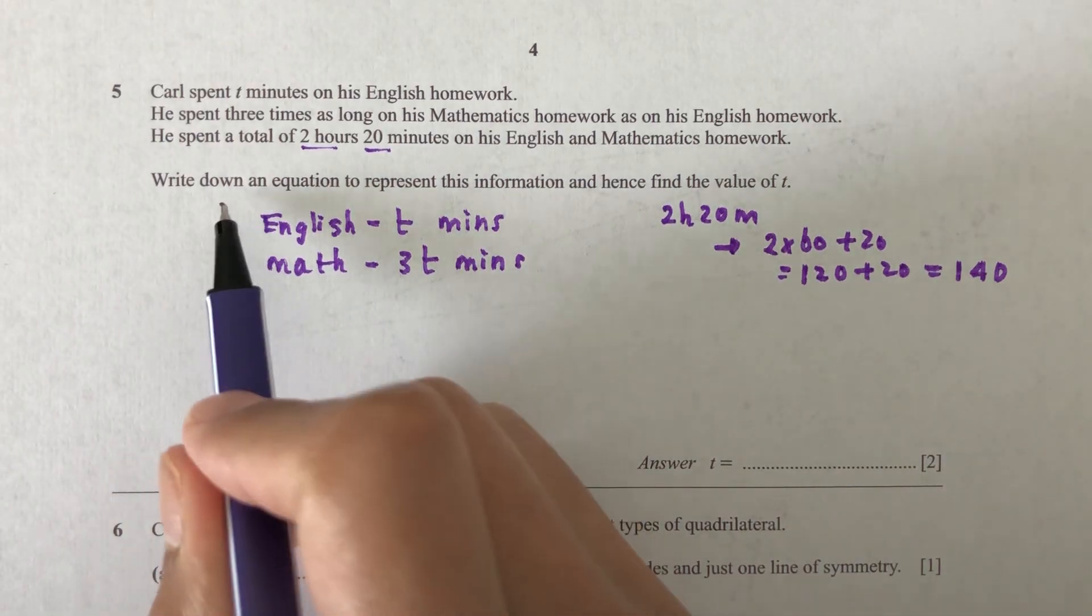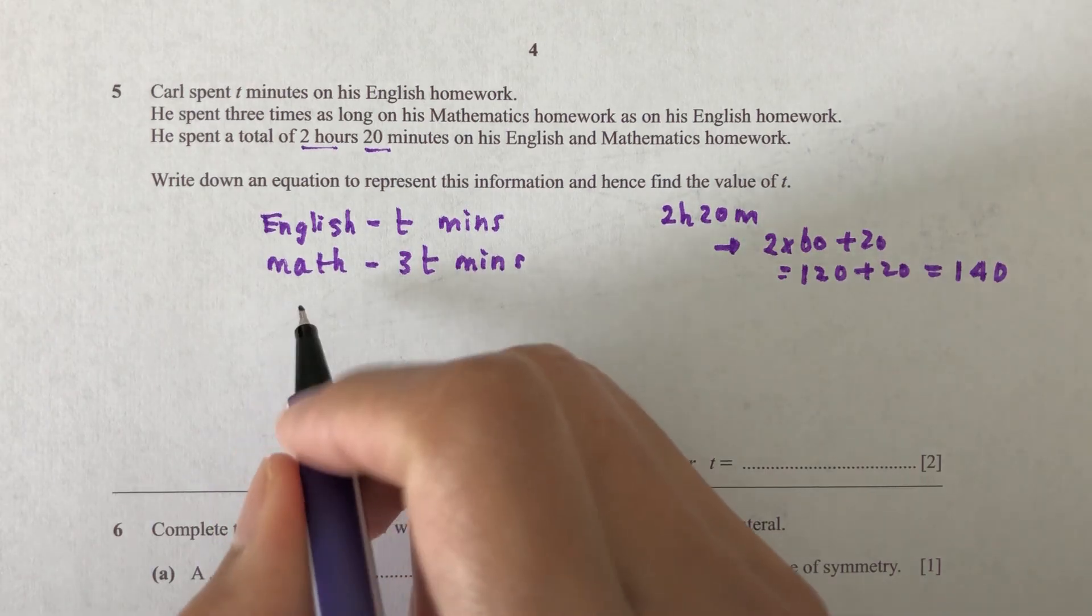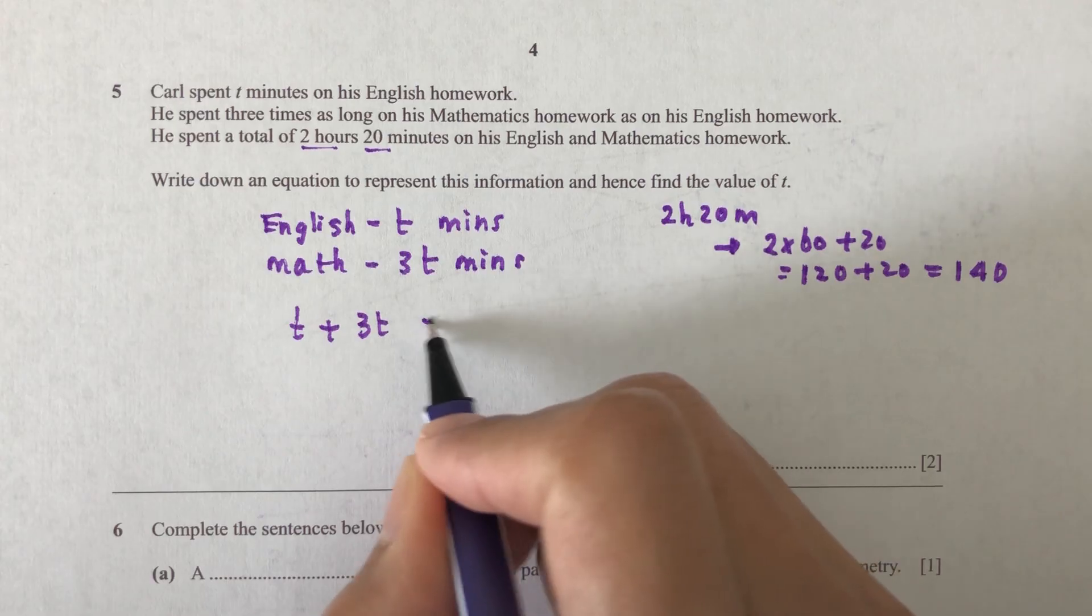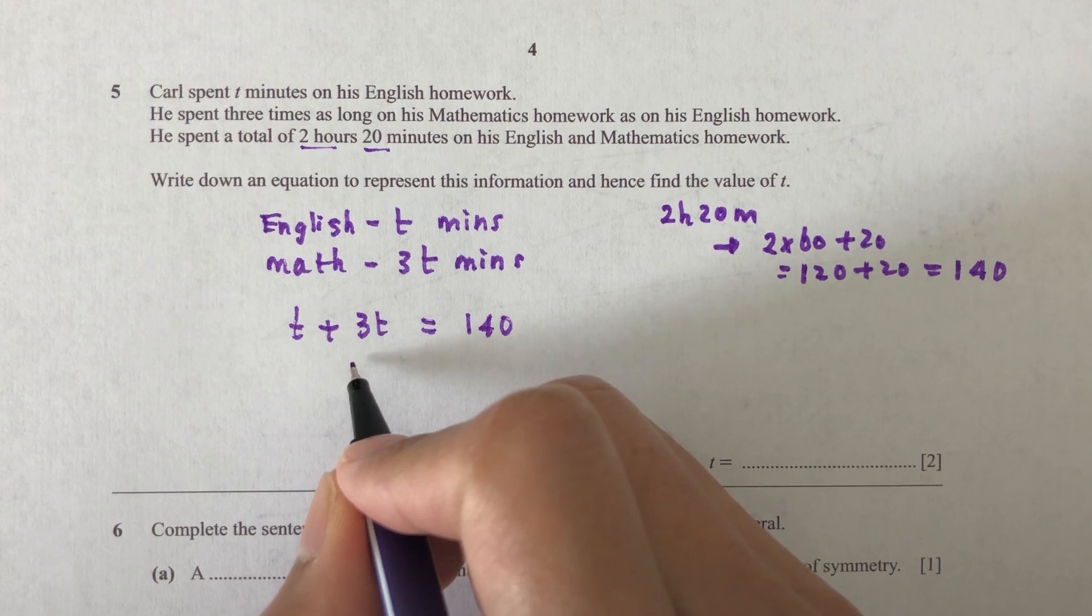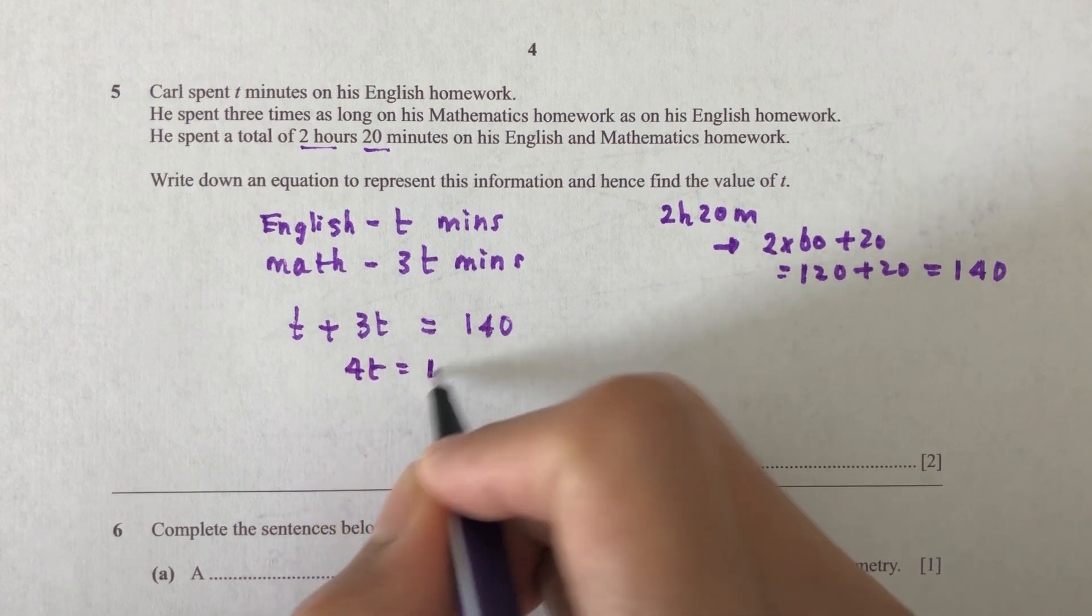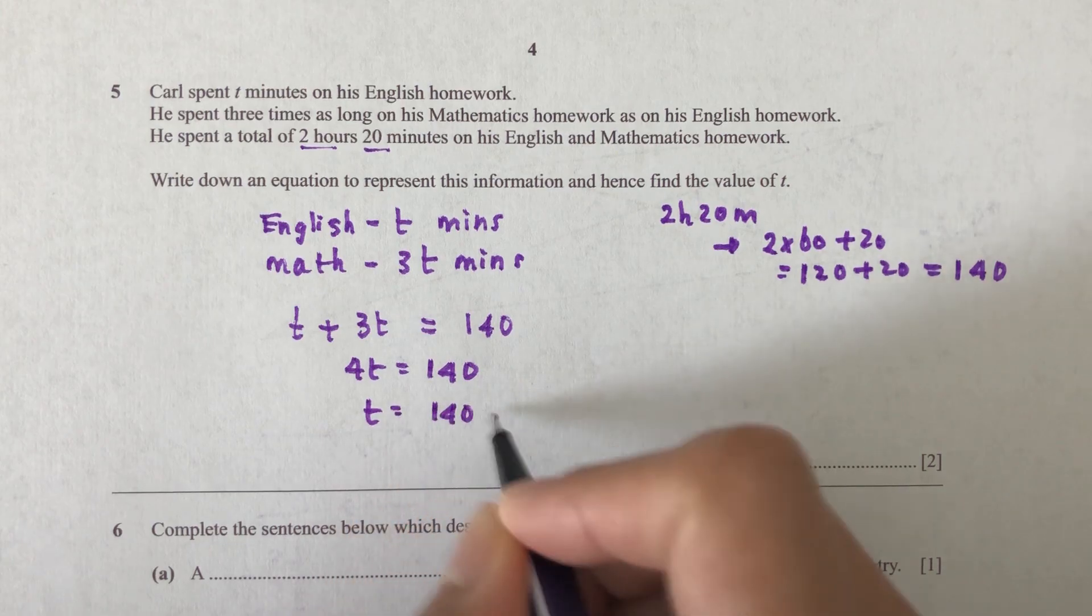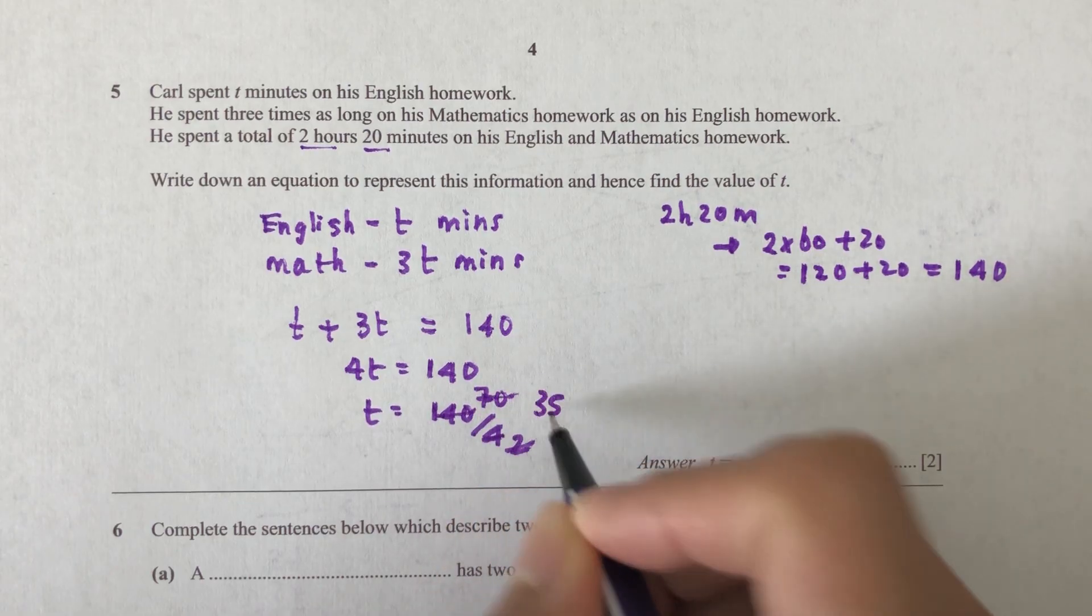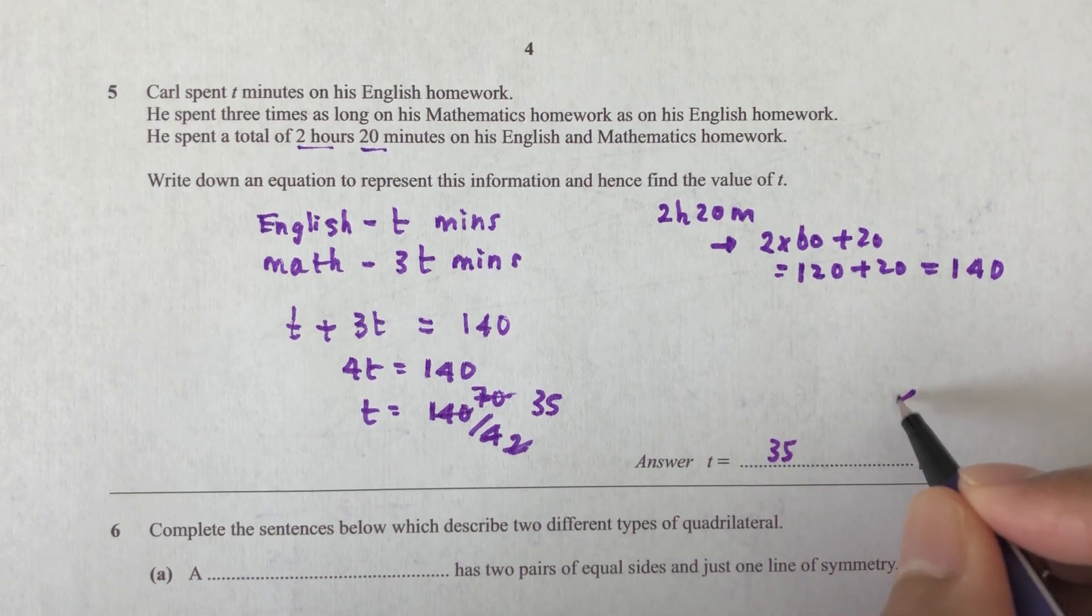So write down an equation to represent this information. So we have T for English plus 3T for math equal to 140. So we have 4T equal to 140. So what is the value of T? T will be 140 divided by 4. So if you divide by 2, we will have 70 to 35. So the T is 35 minutes.